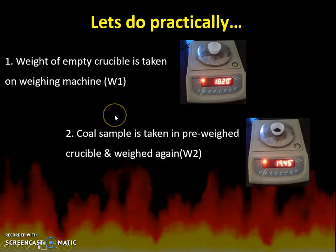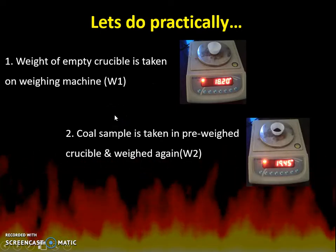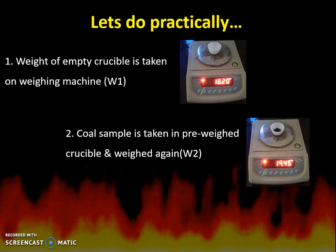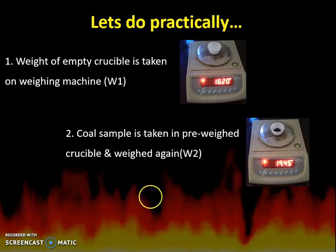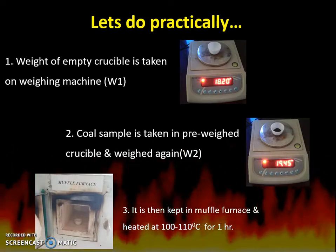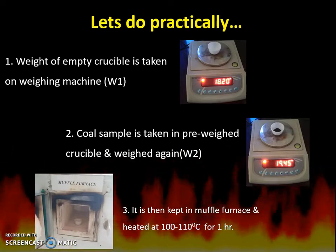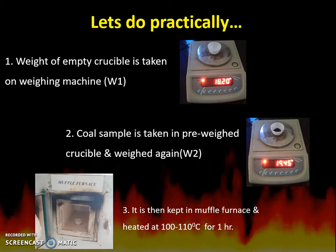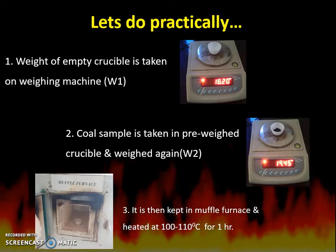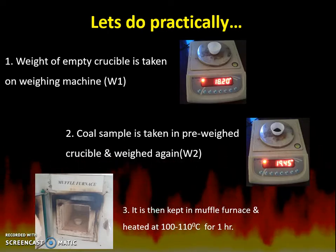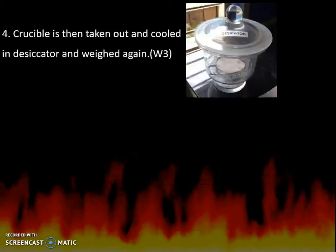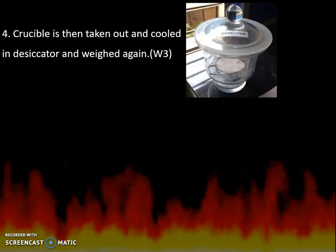Then you take the coal sample into that crucible and again its weight is taken as W2 grams. Then the crucible along with the coal sample is kept in a muffle furnace and it is heated at about 100 to 110 degrees Celsius for one hour.